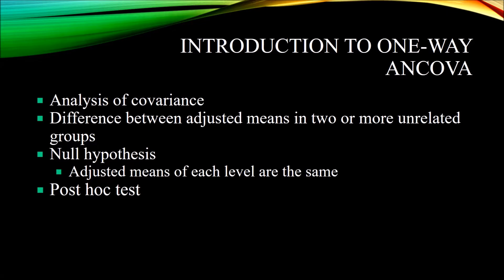The one-way ANCOVA tells us about the difference between adjusted means in two or more unrelated groups. If we compare the one-way ANCOVA to the one-way ANOVA, the one-way ANOVA looks at the difference between means in three or more unrelated groups — because with just two groups we would use a t-test. However, in the ANCOVA model we have a covariate included. So if we had one independent variable with only two levels and a covariate, we would use one-way ANCOVA. With one independent variable, two levels, and no covariate, we could use one-way ANOVA or an independent samples t-test.